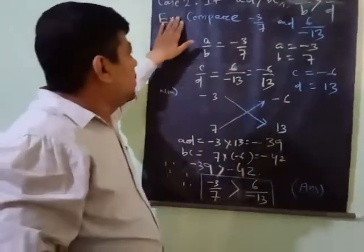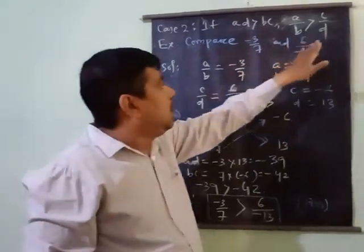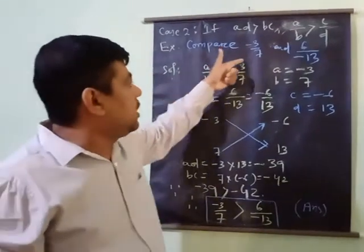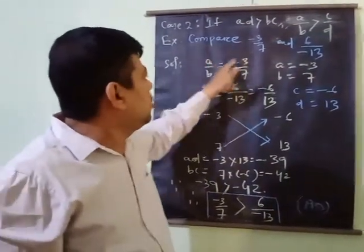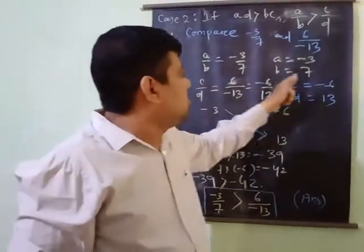Let us see one example: compare minus 3 by 7 and 6 divided by minus 13. So here A by B is equal to minus 3 upon 7. So A is equal to minus 3, if you compare A is equal to minus 3, B is equal to 7.